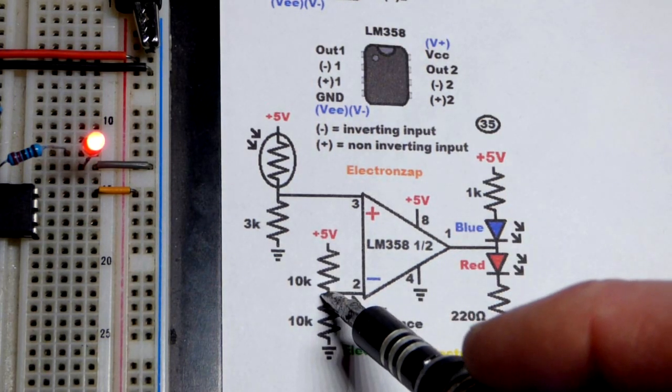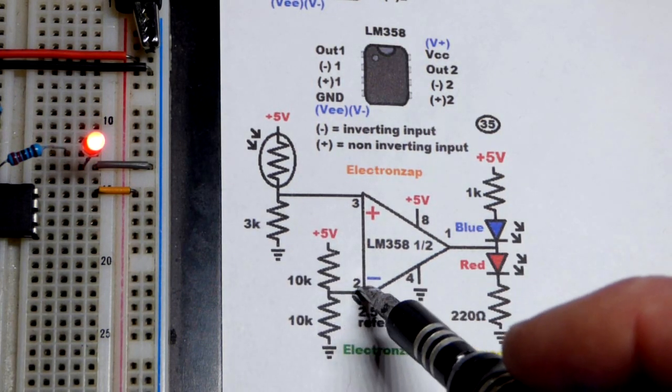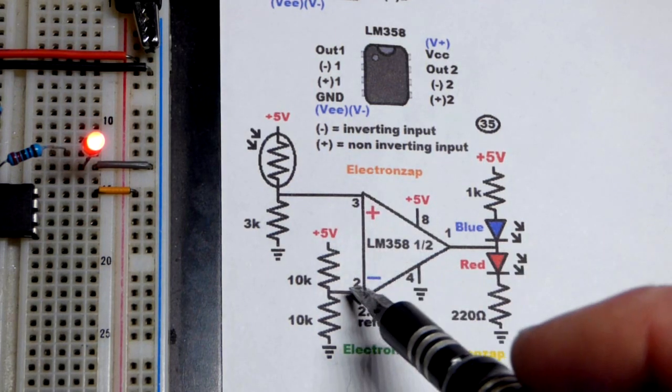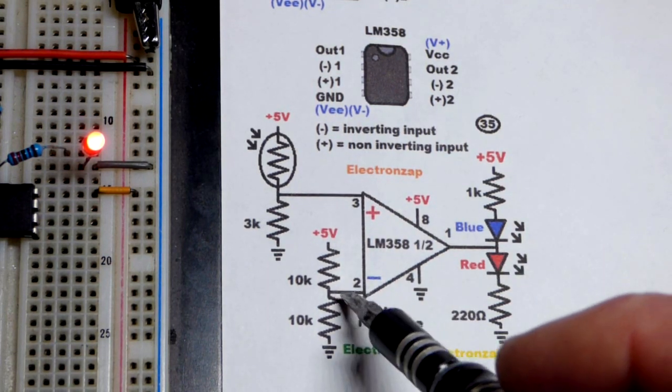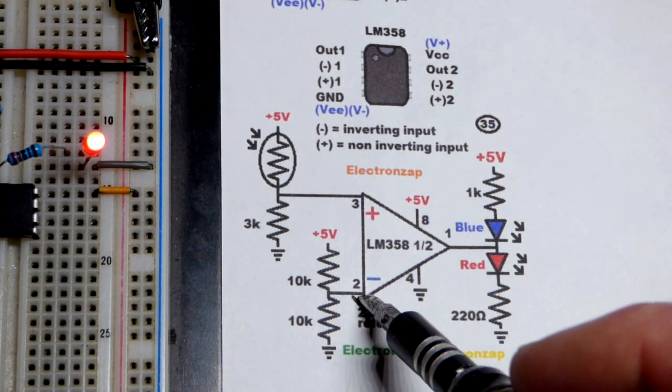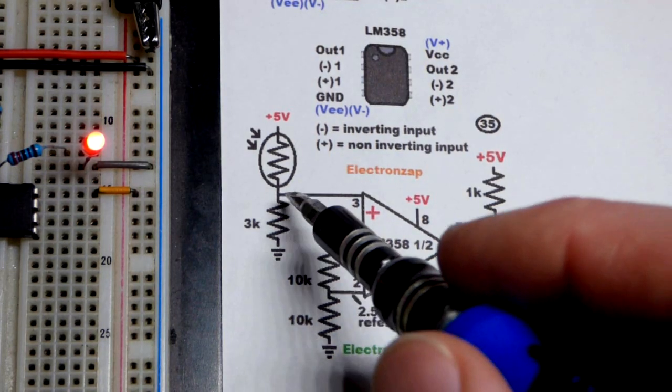So we set half of the supply voltage with fixed resistors there. Current doesn't go in or out of either of these inputs. It just looks at voltage. That's all it does. So we'll have half of the supply voltage as a signal.